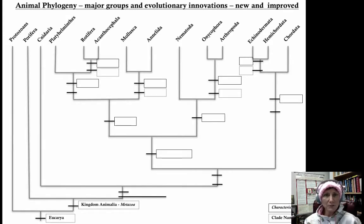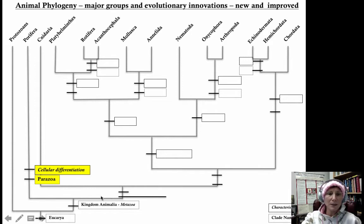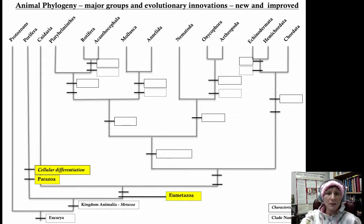This is the phylogeny I've been showing you this semester, hand-drawn, and you'll be able to hand draw it on the final exam. We've already done the protozoans and talked about the perizoa. The first split within kingdom Animalia is the perizoa versus the eumetazoa. Perizoans are characterized by cellular differentiation, which you didn't see in protozoans. The eumetazoa — all the rest of the metazoans — are characterized by developing from germ layers.